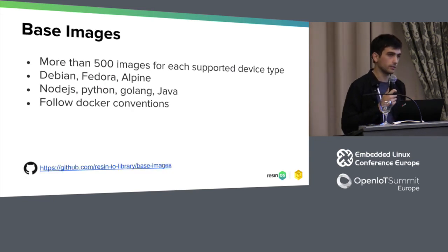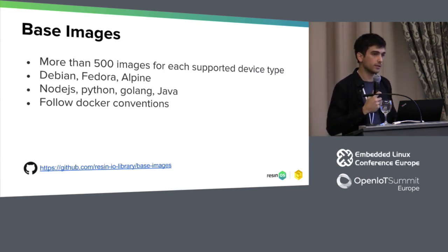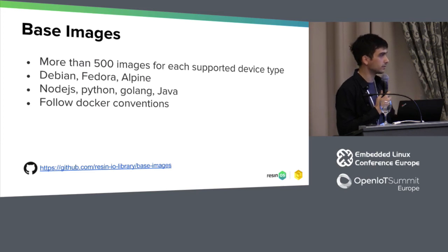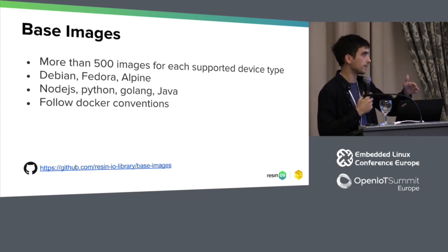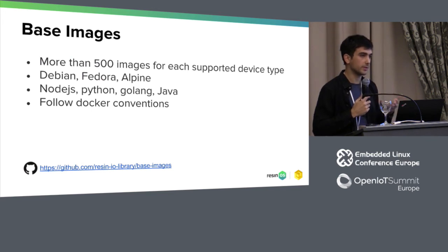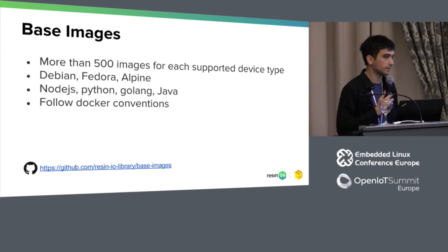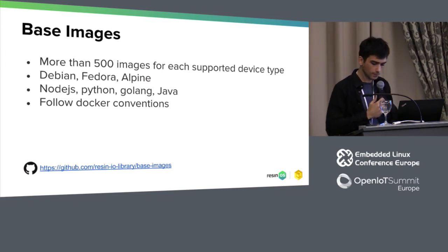We also provide a large library of base images. The Resin OS Docker images are primitive in terms of development since they give you a Yocto user space, so we also provide base images for all devices with Debian, Fedora, or Alpine user spaces. For each of those, we have Node.js, Python, Golang, and Java variants which include all the development tools for that particular framework. They're mostly based on the Docker official base images and follow their conventions, but we've added features specific to running containers on embedded devices.